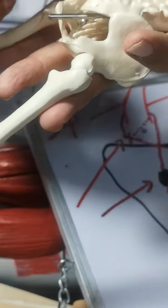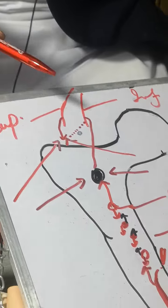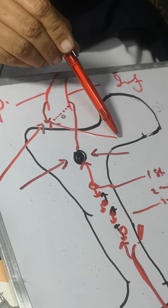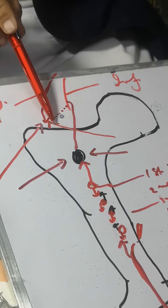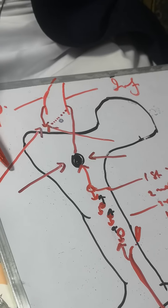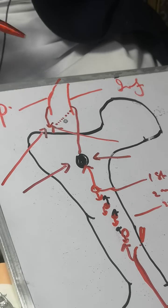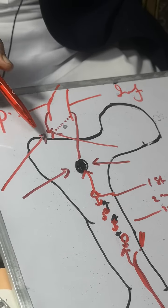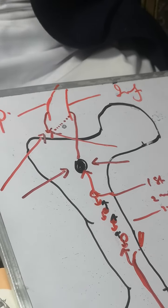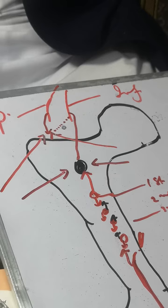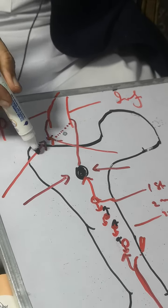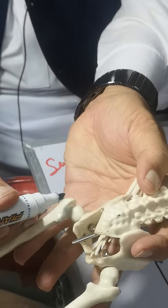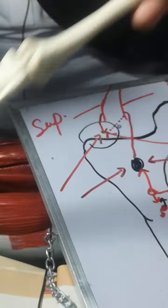In this trochanteric fossa, there is an anastomosis. You can see the ascending branch of the medial circumflex and the ascending branch of the lateral circumflex, and from above, a descending branch of the superior gluteal artery. This anastomosis is called the trochanteric anastomosis, present in this trochanteric fossa.